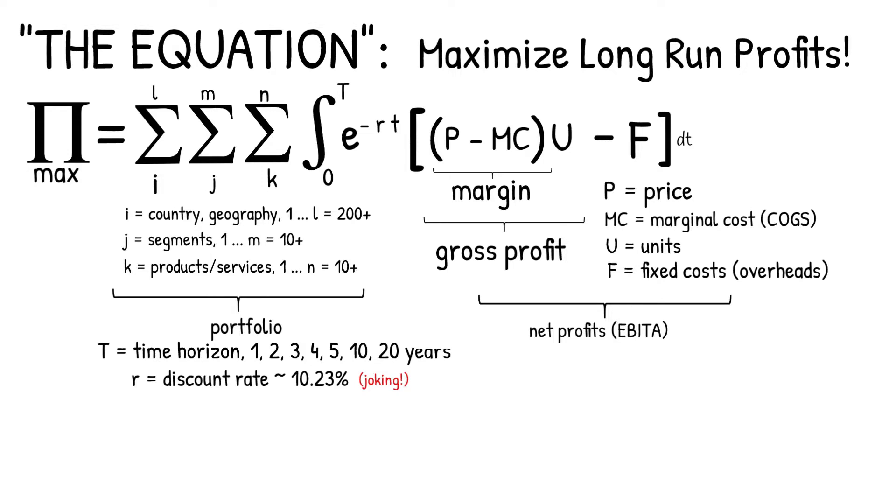But there is a problem. What's the optimal price? Well, infinite, of course. What's the optimal marginal cost? Now, that would be zero. And what's the optimal fixed cost? That would be zero as well. Selling oxygen to everyone everywhere at an infinite price is the ultimate business model.